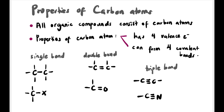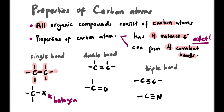Now let's look at the properties of carbon atoms — why carbon is the heart of organic chemistry. All organic compounds consist of carbon atoms. A carbon atom has four valence electrons, so it forms four covalent bonds to achieve an octet. It can form single bonds with carbon or halogens (X), double bonds with carbon or oxygen, or triple bonds with nitrogen or carbon itself. When drawing structures, lone pairs do not need to be shown.